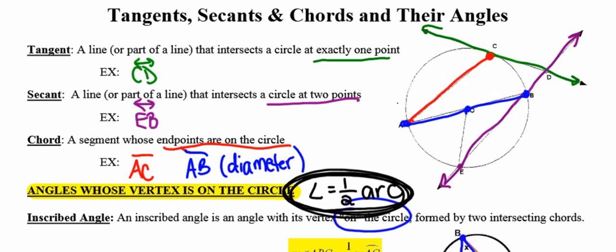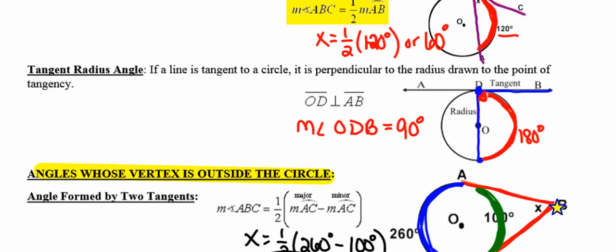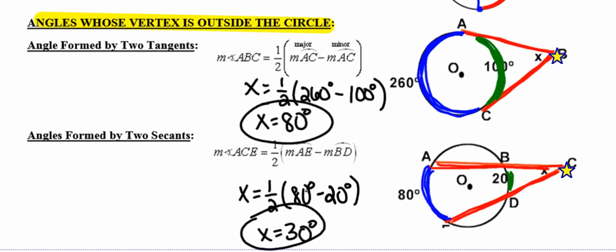In summary, any time the vertex is outside the circle, the degree measure of the angle is going to be half of the difference between the two intercepted arcs.